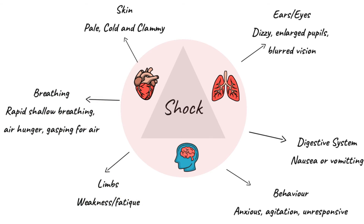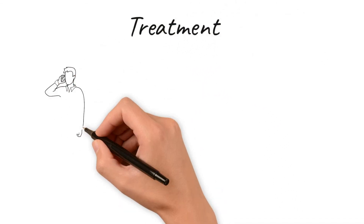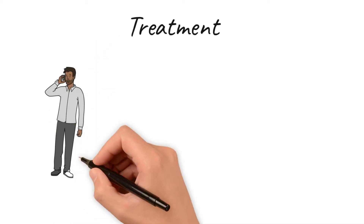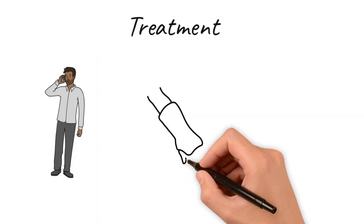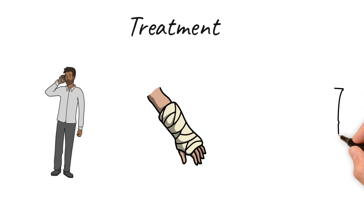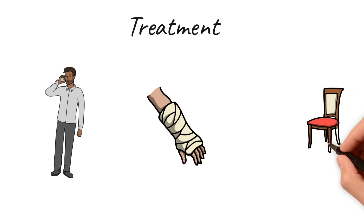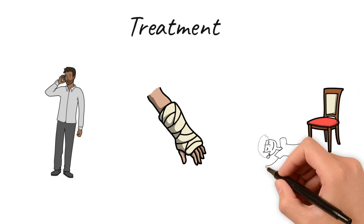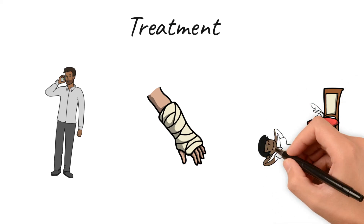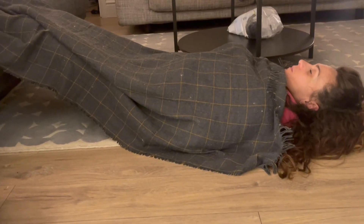Now let's look at how we treat somebody who's in shock. Shock is a medical emergency — we must call the emergency medical services straight away. We must then treat that person's blood or fluid loss: if it's bleeding, we need to put pressure on it and bandage it. We then need to lay them down and lift their legs up, to help the blood circulate to our vital organs — the brain, the lungs, the heart. We'll also keep them nice and warm, because the skin will feel very cold, and we reassure them. The sooner that person gets help, the better.